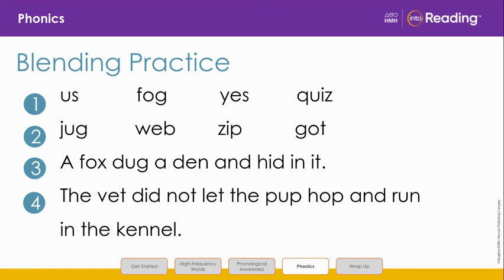We are going to read each line one at a time together and then talk about the words. Are you ready? Let's read line 1: us, fog, yes, quiz. Let's try line 2: jug, web, zip, got.